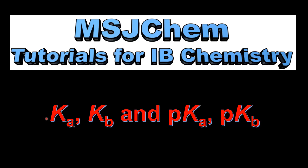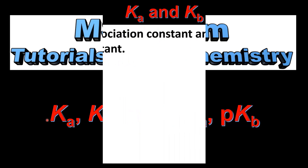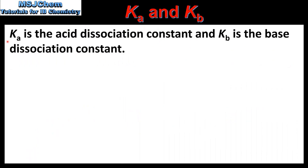This is MSJChem. In this video I'll be looking at the relationship between Ka, Kb, pKa, and pKb. In a previous video we looked at the Ka and the Kb. Ka is the acid dissociation constant and Kb is the base dissociation constant.